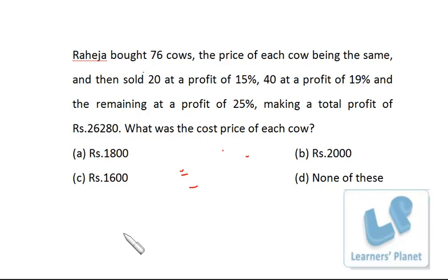I assume it to be 100 rupees. So 76 cows, each cow 100 rupees, and now he is selling 20 cows at a profit of 15%.